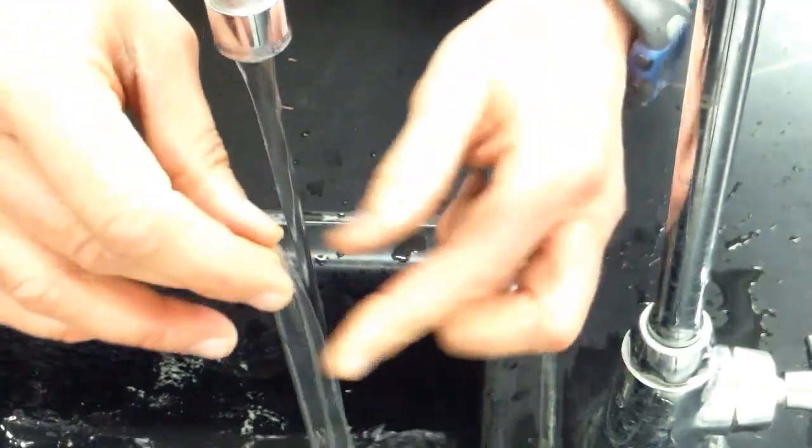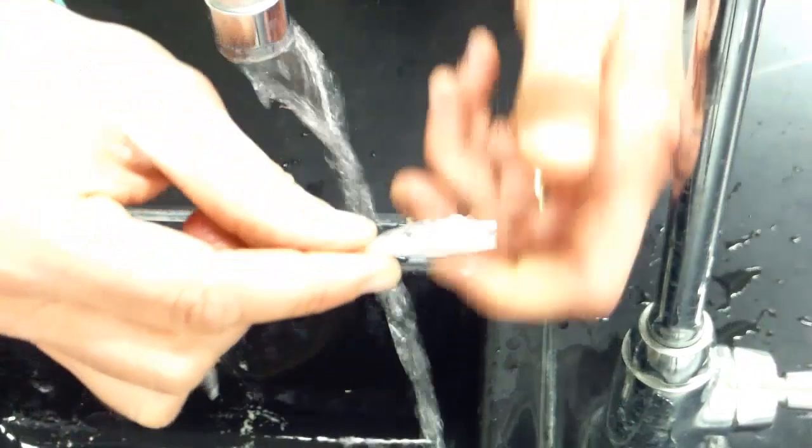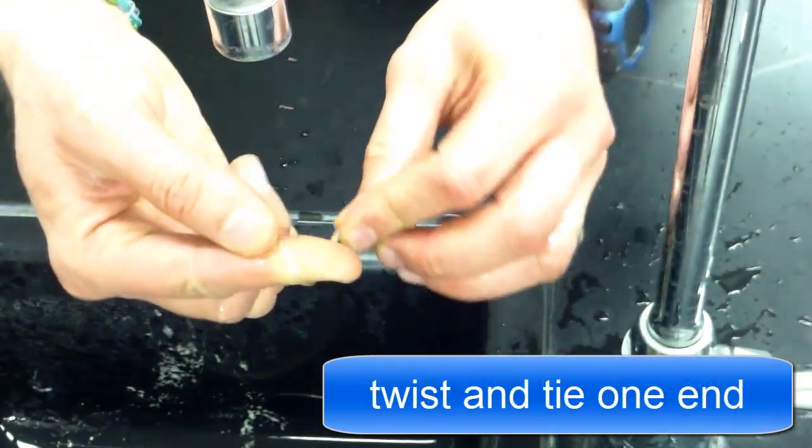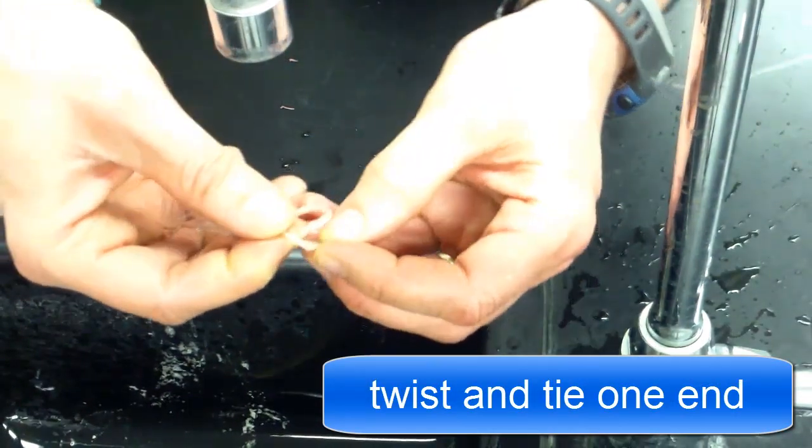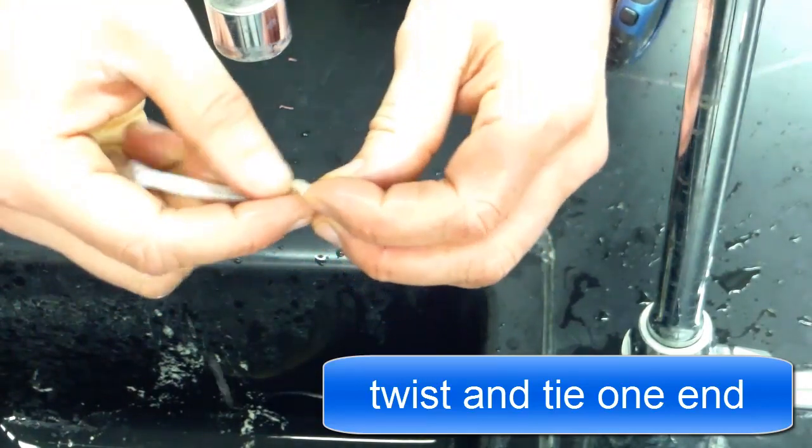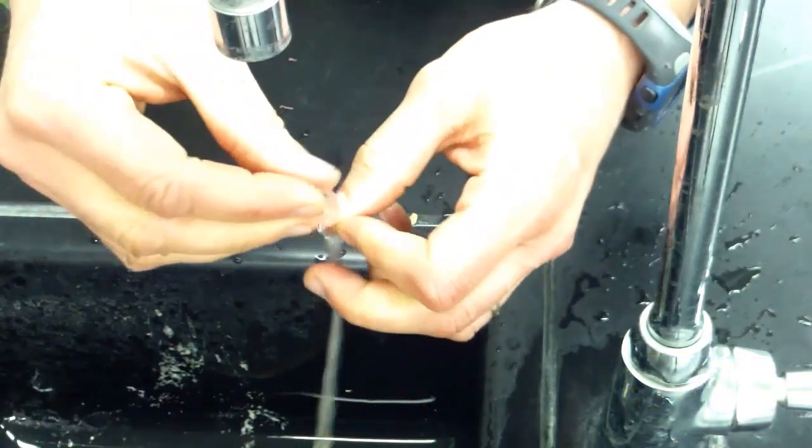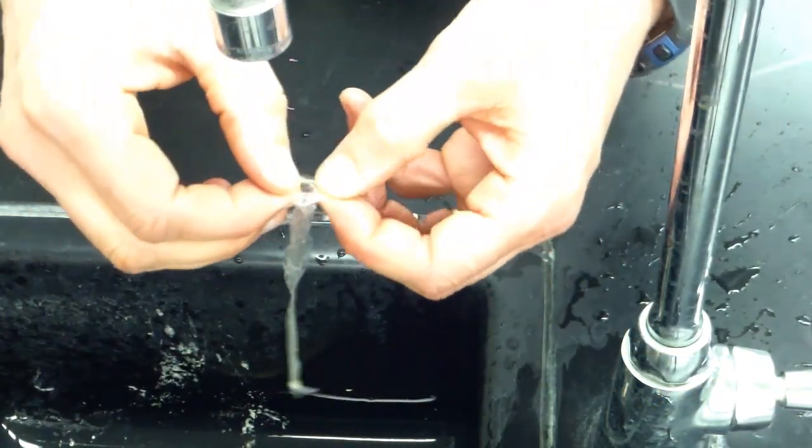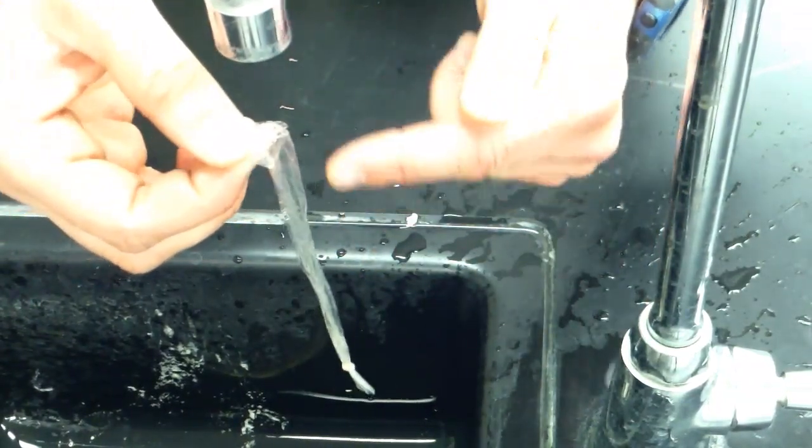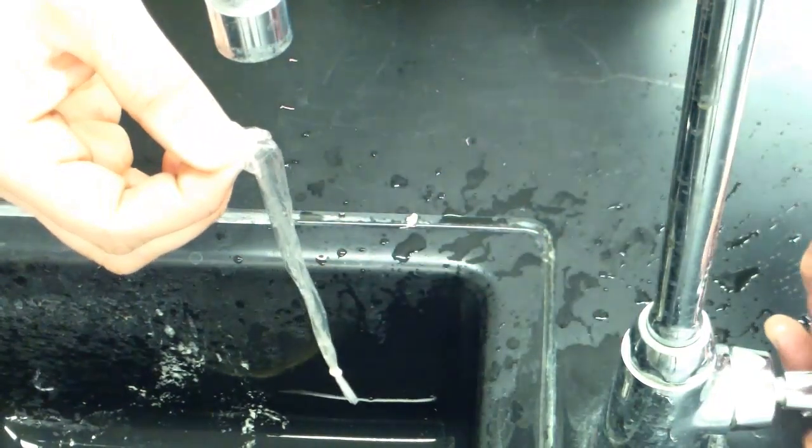So once you get it to this point, you can let the water out. And then what you want to do on the one end is you want to tie off the end by just making an overhand knot. So here I am tying off one end of the dialysis tubing. And now what you have is you have a tube that's been tied off on one end and now you can fill the dialysis tubing with the starch solution and the glucose solution and then tie off the other end. So let's go do that.